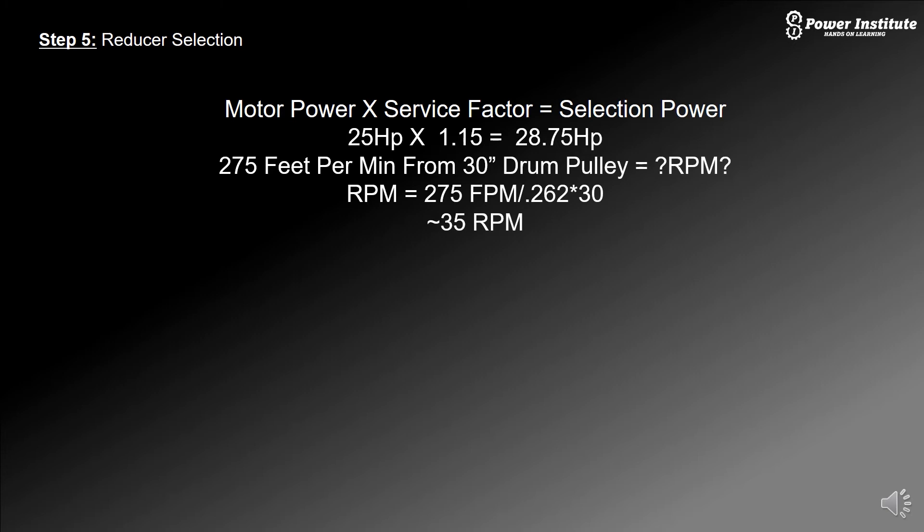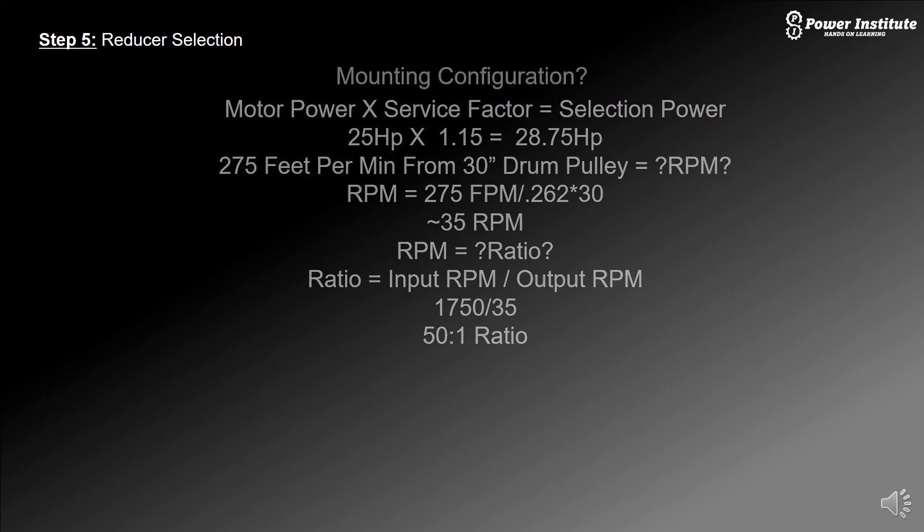Now what ratio do we need for the gearbox? We take our input RPM, which is the 1750 as a standard, divided by the output RPM that we just calculated, divided by the 35. So 1750 divided by 35 is 50 to 1. So we need a gearbox that's rated for 28.75 horsepower at a minimum with a 50 to 1 ratio. That gets us started for the gearbox itself.